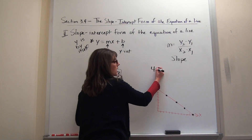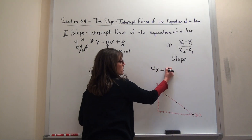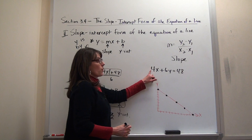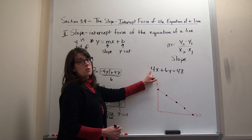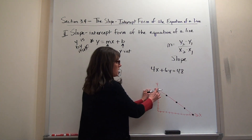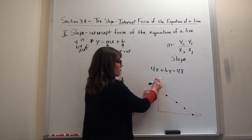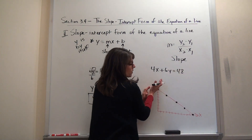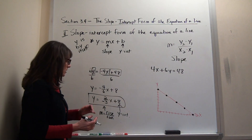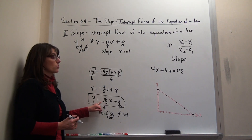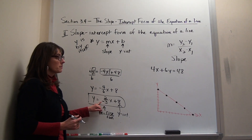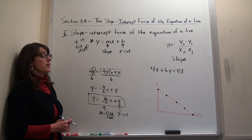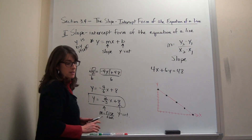If the y is not by itself, you cannot say the number in front of x is the slope, and you cannot say the standalone number is the y-intercept. For example, in the original equation 4x + 6y = 48, if you said slope is 4 and went up 4 right 1, you'd get a completely wrong line. Clearly the slope was -2/3.